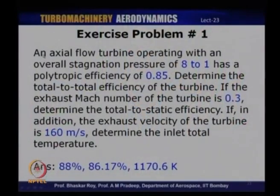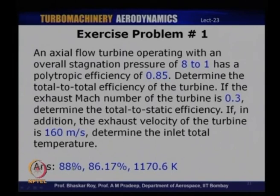The first exercise problem: an axial flow turbine operating with an overall stagnation pressure ratio of 8:1 has a polytropic efficiency of 0.85. Determine the total-to-total efficiency. If the exhaust Mach number is 0.3, determine the total-to-static efficiency. If in addition the exhaust velocity is 160 m/s, determine the inlet total temperature. Answers: total-to-total efficiency 88%, total-to-static efficiency 86.17%, inlet total temperature 1170.6 K.